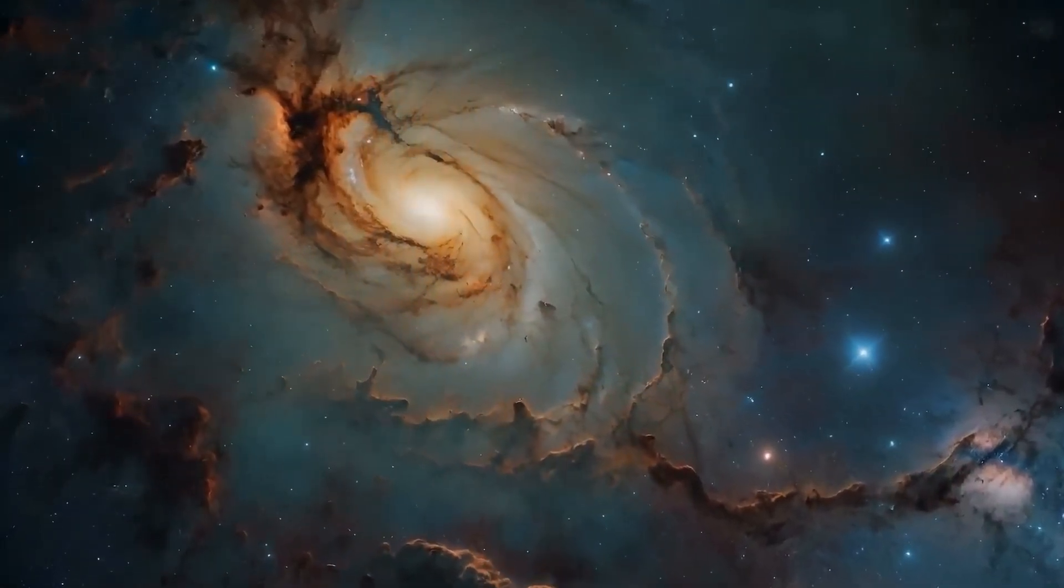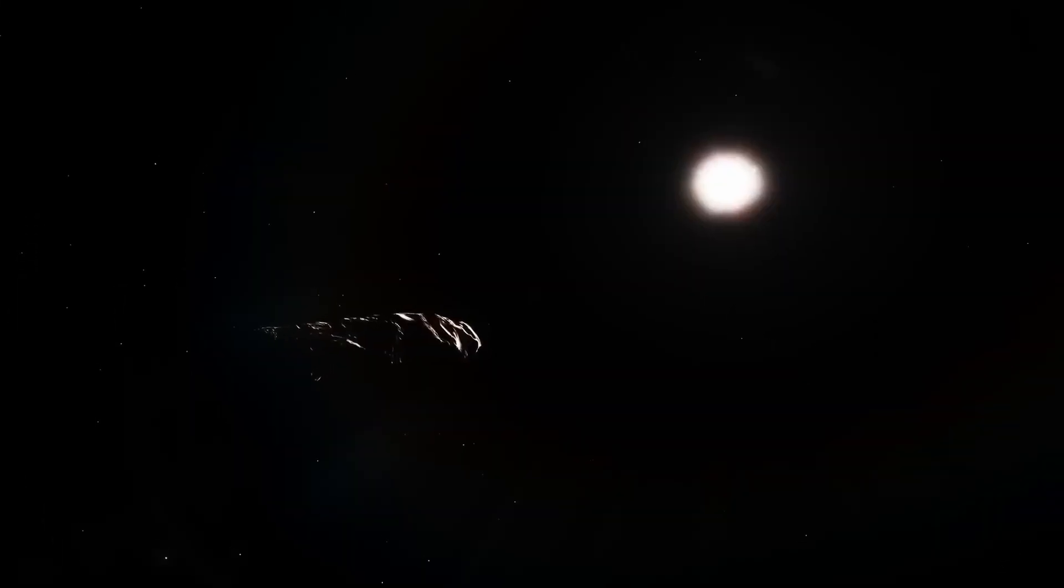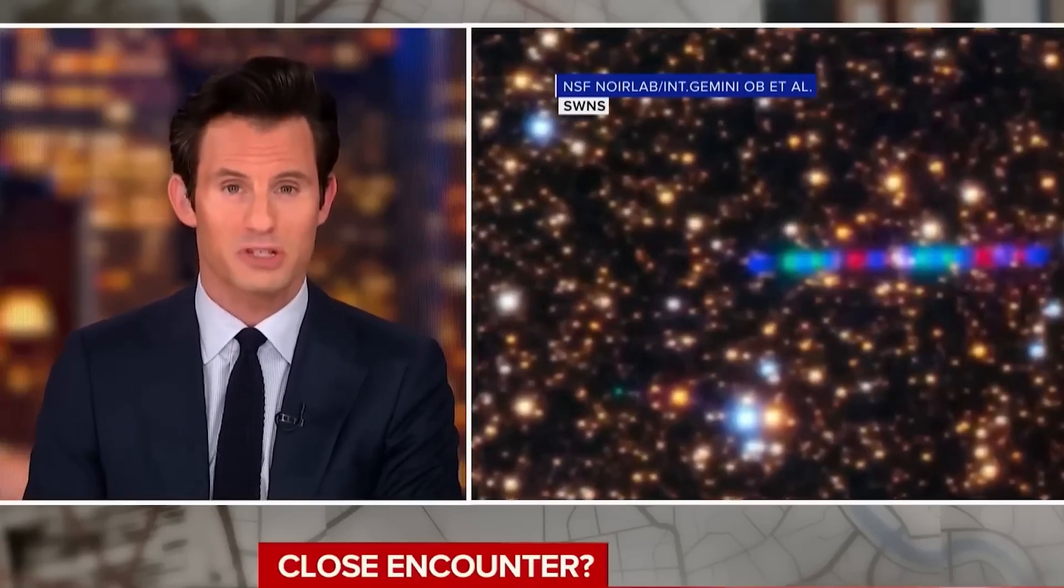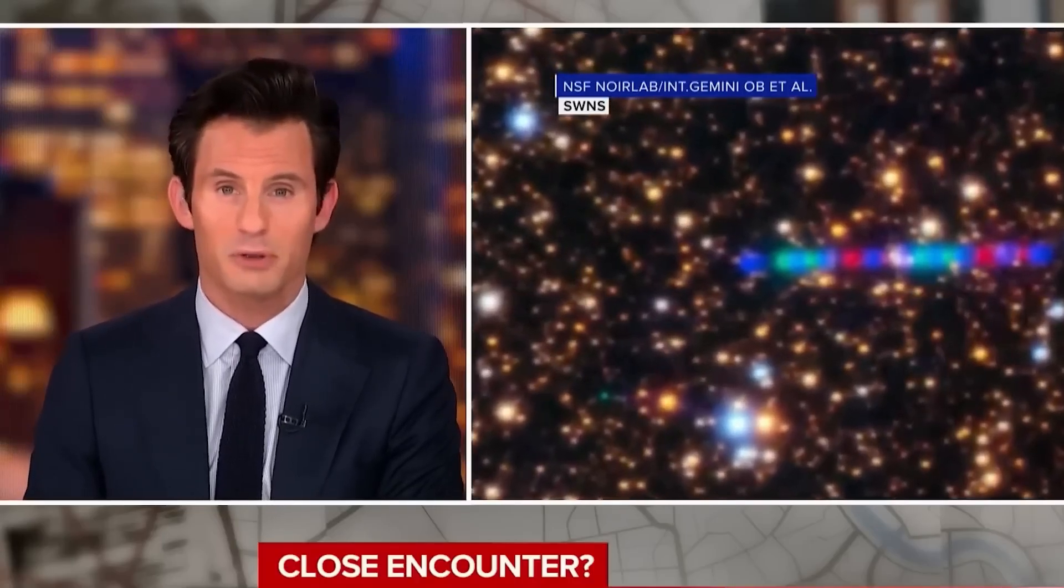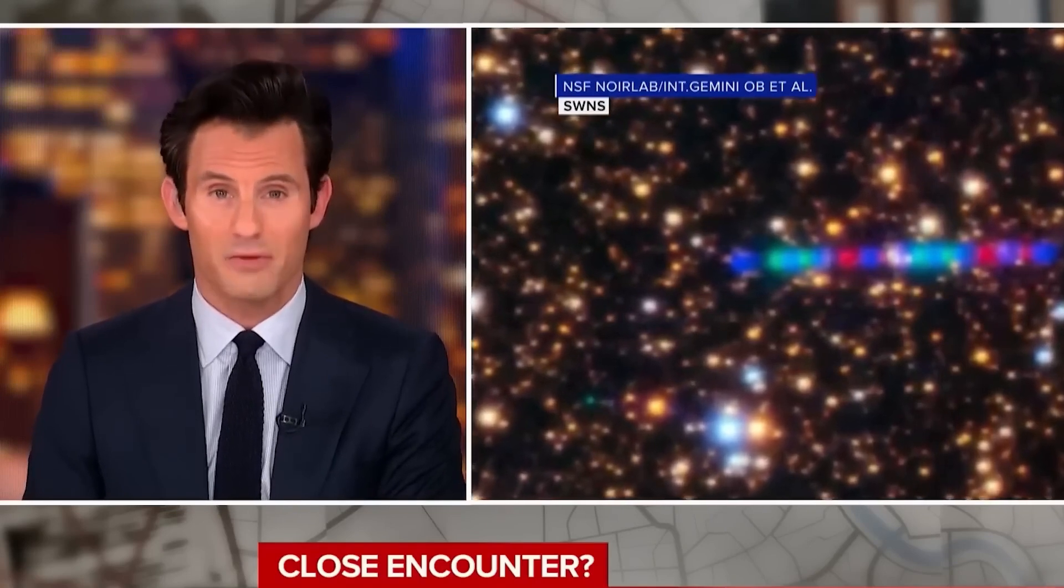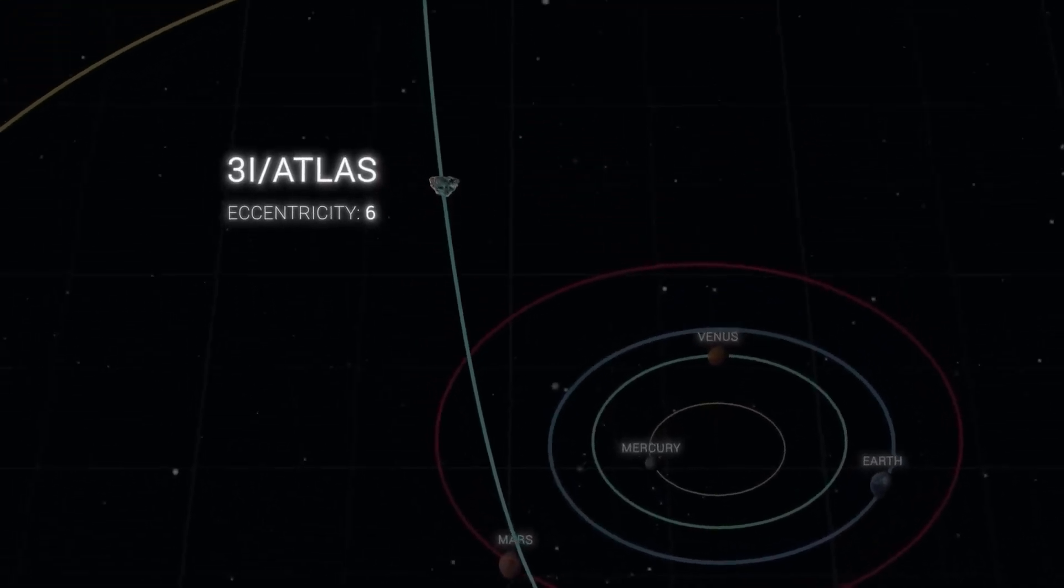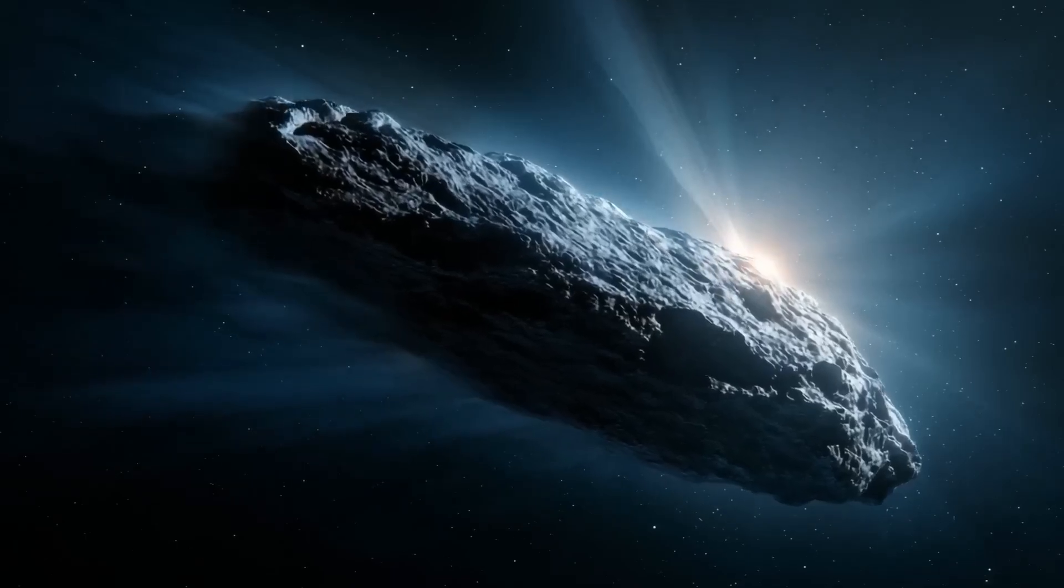So here we are, caught in a standoff. If it's a comet, it is stretching what we thought was possible for interstellar visitors. If it's not, then it could be the first piece of technology built beyond our world that we have ever seen. Right now, the evidence can't tip fully in either direction, but this balance won't hold forever. What comes next may finally decide the story.